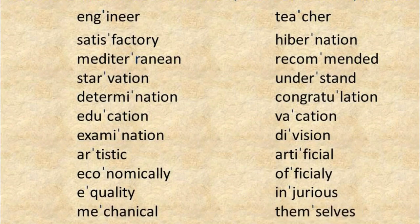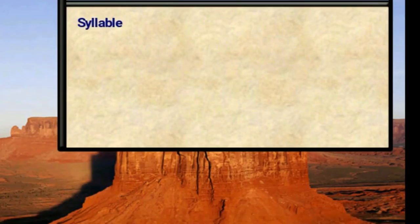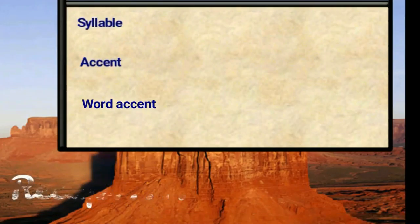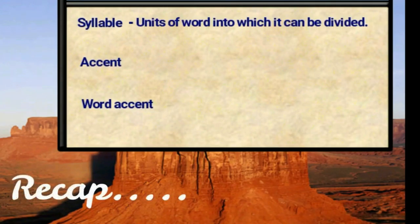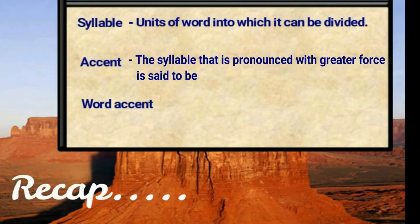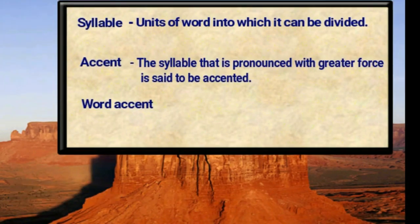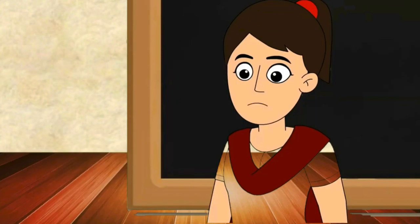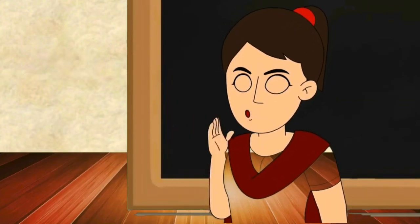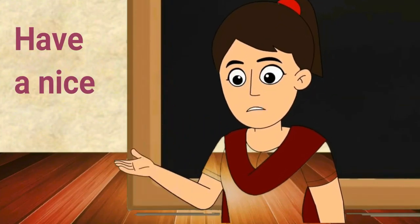Did you notice the stress and how it differs from word to word? In this module, we came to know about syllable, accent, and word accent. A syllable is a unit of words into which a word can be divided. The syllable that is pronounced with greater force is said to be accented. We also learned how to pronounce a word in isolation with correct accent. Thank you, friends. I'll continue the topic of accent in connected speech in the next module. Till then, have a nice time.